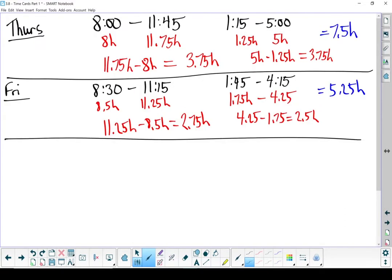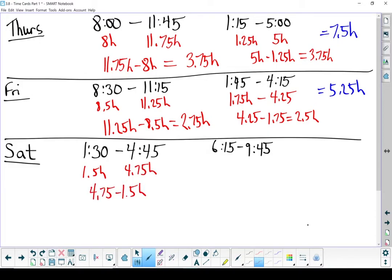Let's end it with Saturday. Converting these into decimals. 1:30 is 1.5 hours. 4:45 is 4.75 hours. Let's subtract the 2. On Saturday morning, Jade worked 3.25 hours. On the evening shift, 6:15, we'll write that as 6.25 hours. 9:45, we're going to write that as 9.75 hours. Let's subtract them. That gives us 3.5 hours for the evening shift. Add 3.25 hours and 3.5 hours together and you'll get 6.75 hours. That's what she worked on Saturday. Let's put that in the chart.